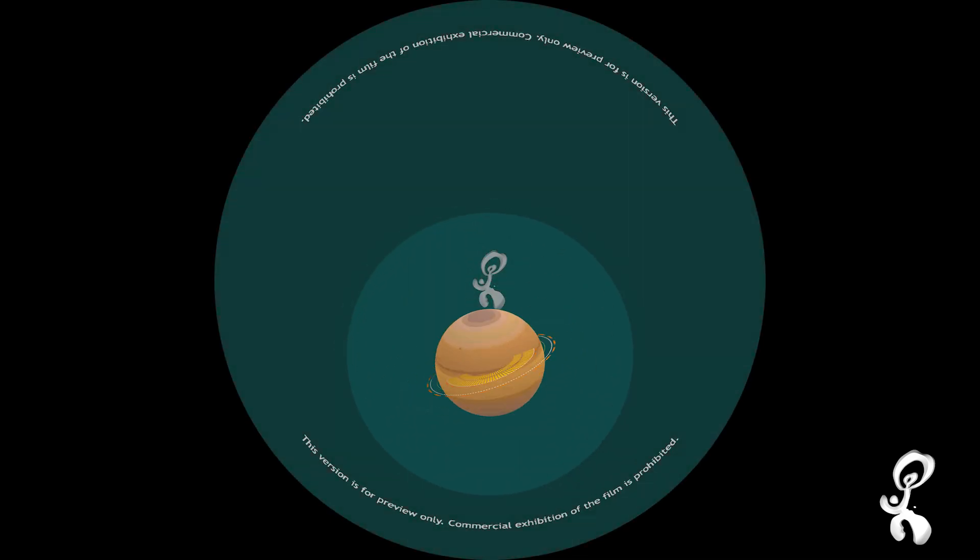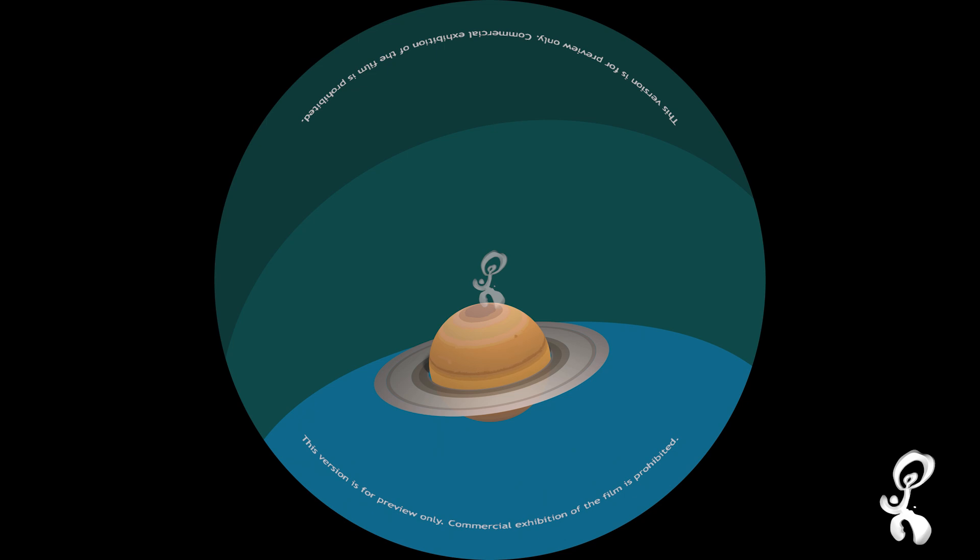The planet with gorgeous rings is Saturn. It is also filled with storms like Jupiter, but it's lighter than water. Someday, if Saturn decides to go for a swim, it will float like a beach ball.